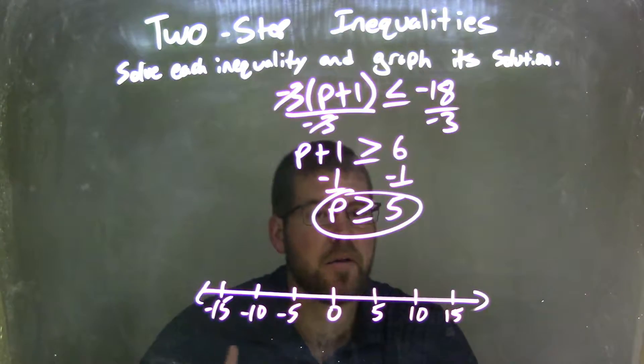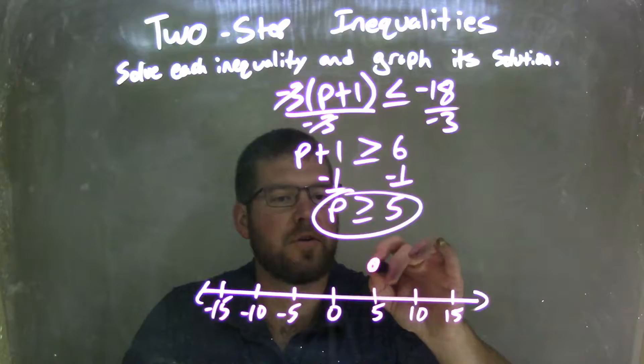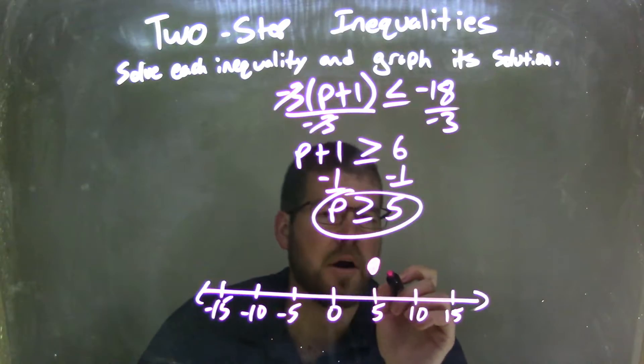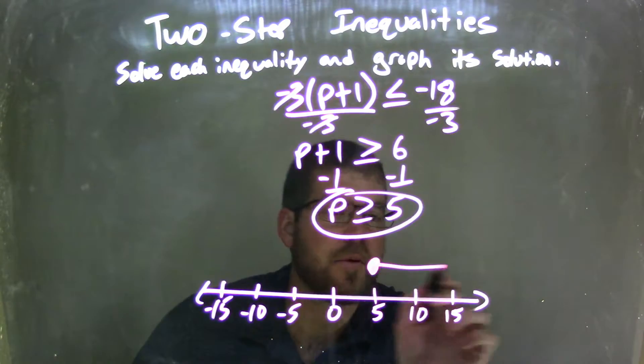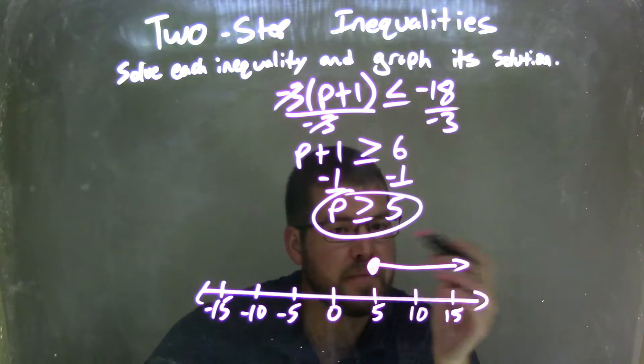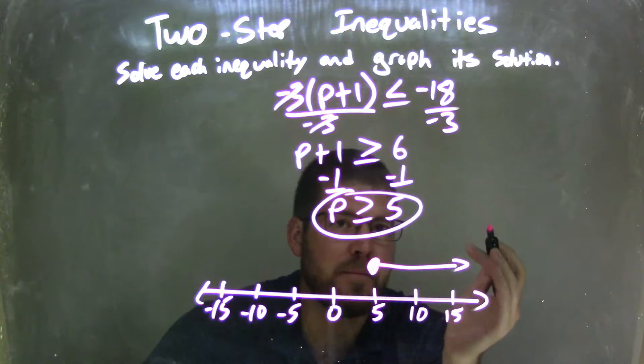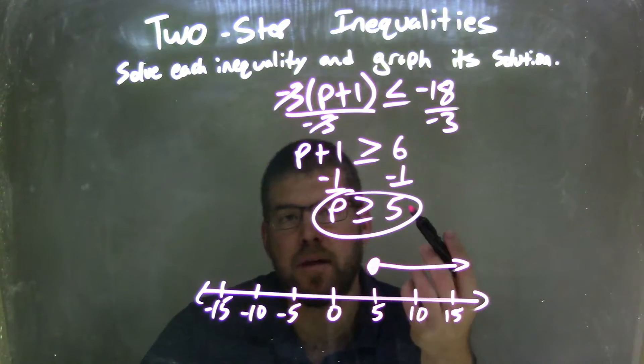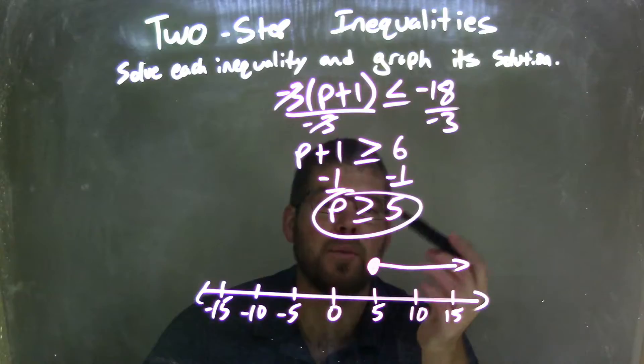Well, since p is greater than or equal to 5, we have a closed circle at 5 because it can equal 5. And then it's greater than, so our arrow goes to the right, representing all the values that p can be. And so our graph matches our final answer of p is greater than or equal to 5.